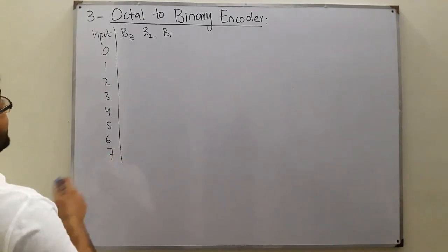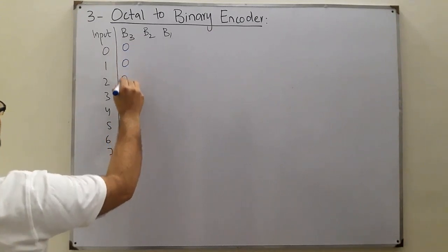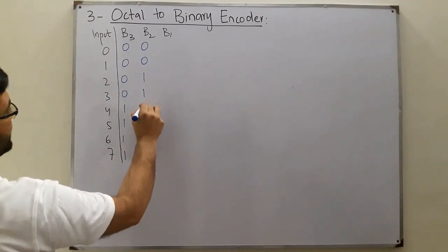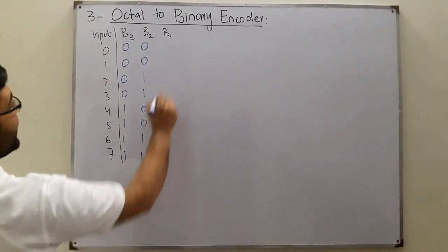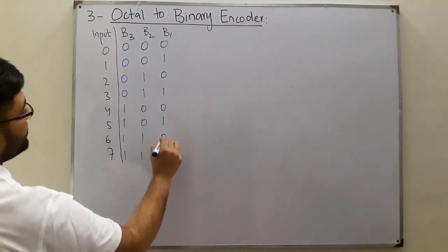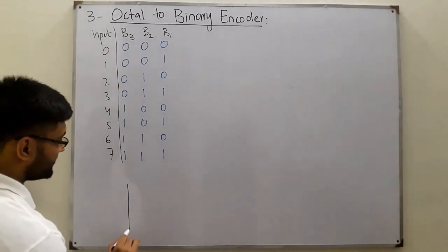The binary equivalent is this. If you don't know how, you need to watch the previous videos. Now this is the octal to binary encoder. In the encoder we will have what I missed in the previous lecture, but let me show you here.